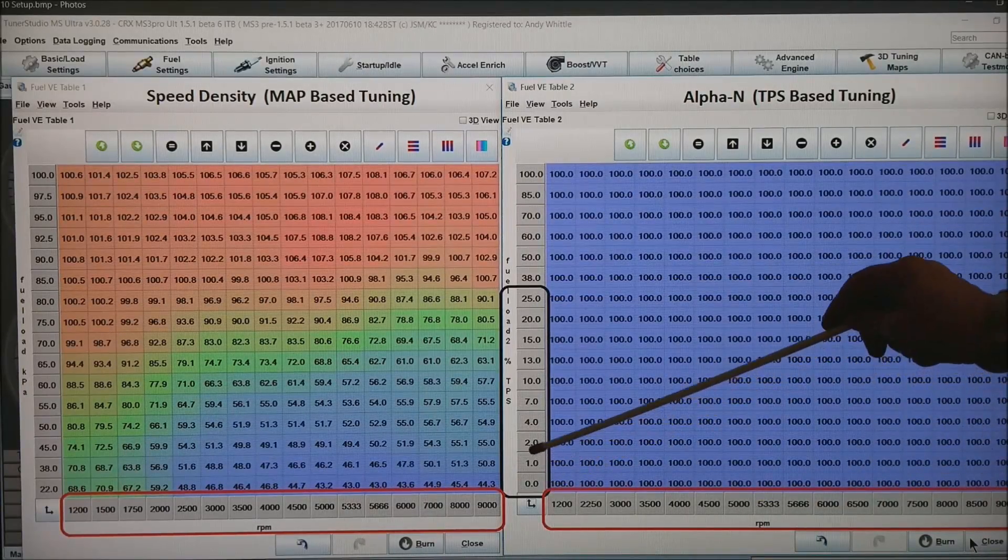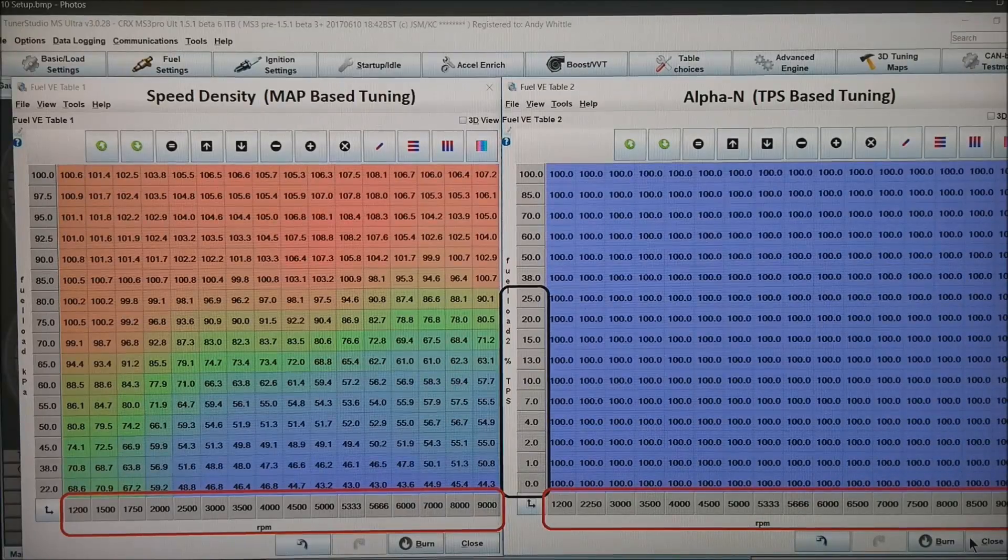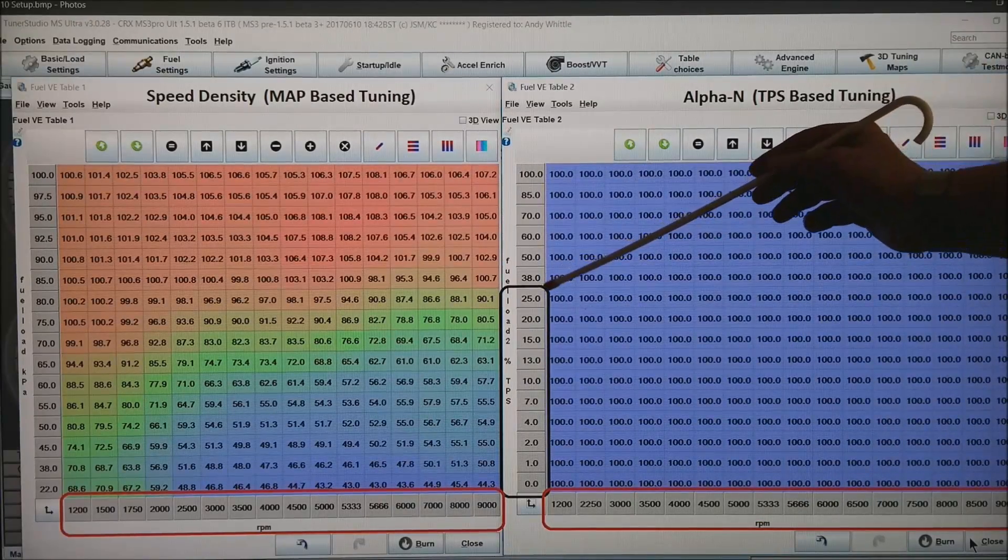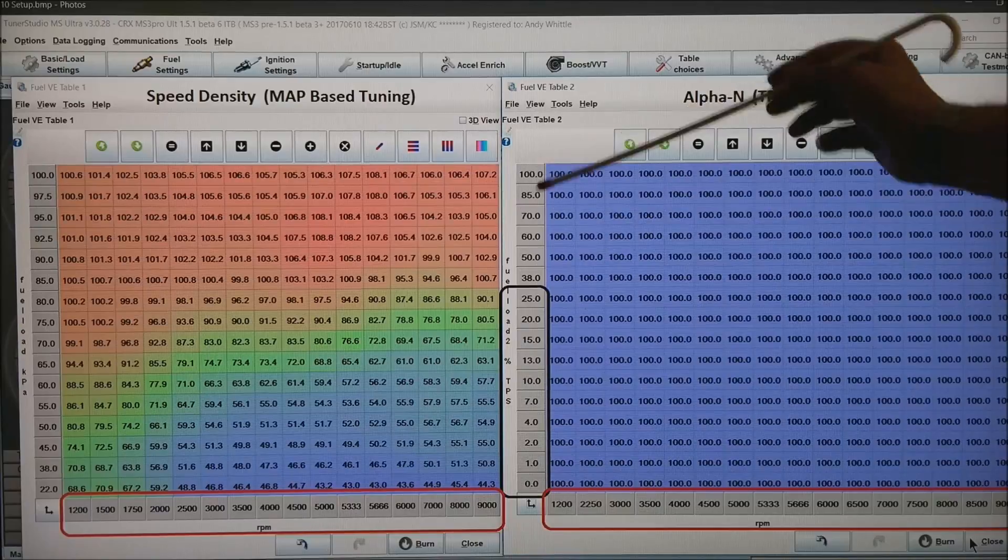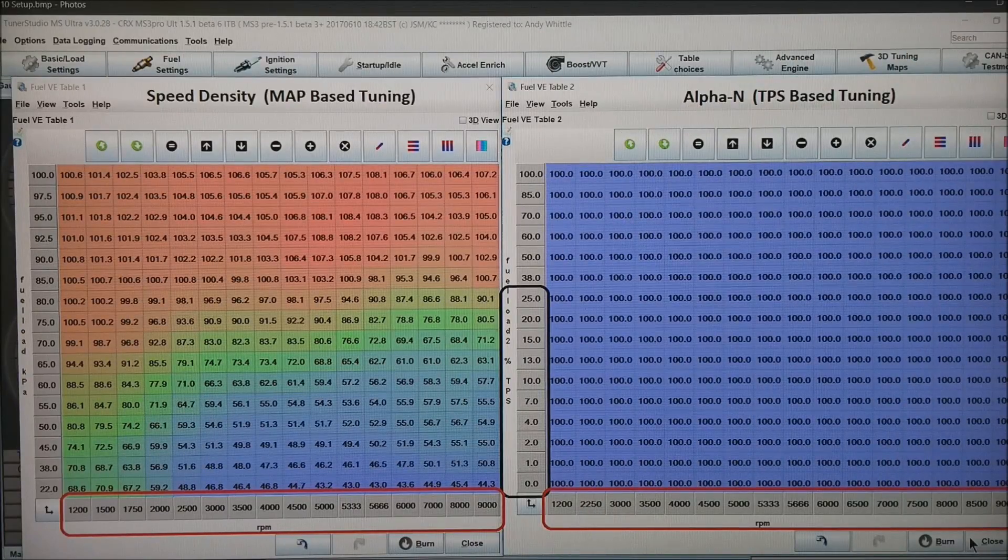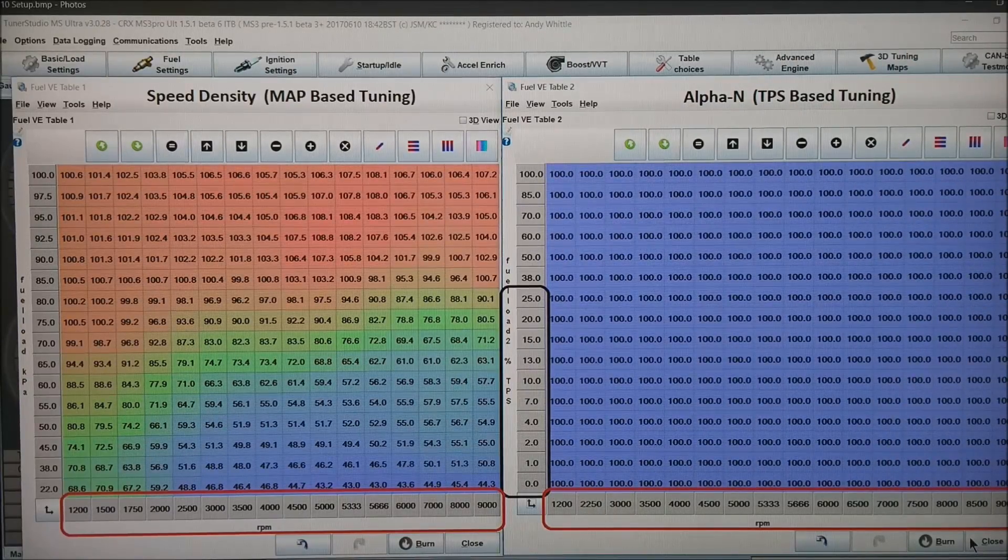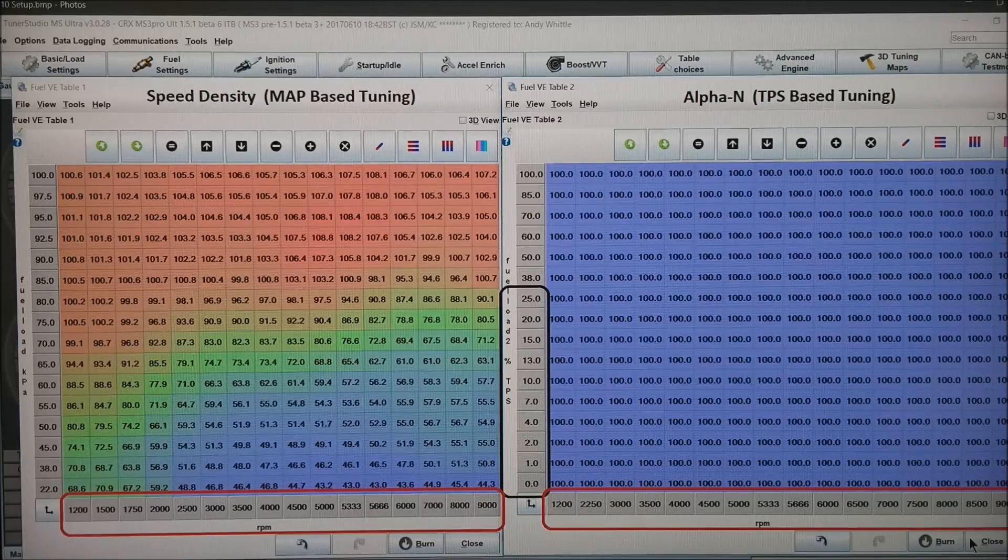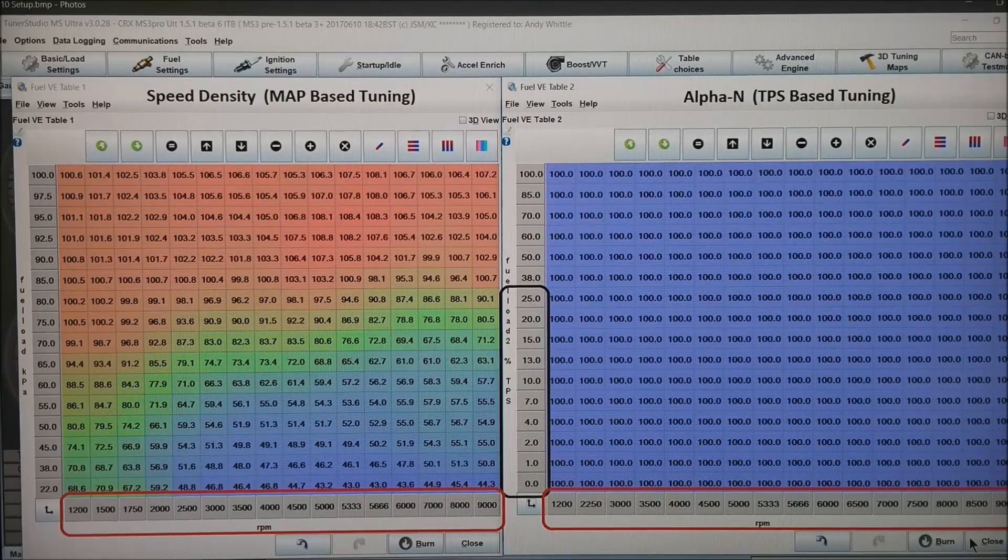I'm jumping from zero to one to two, four, seven, up through about twenty five percent throttle. And then thirty eight to a hundred on the top rows. We do this because alpha end tuning is very sensitive on the bottom end of your throttle position sensor.